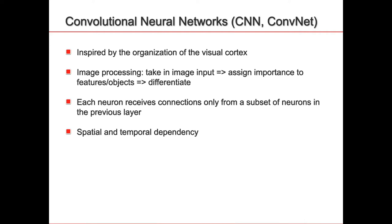In a CNN, each neuron receives connections only from a subset of neurons — not all, unlike a standard neural network where each neuron receives a weight from all nodes in the previous layer. This reduces the number of parameters: the weight matrix W has the same size but contains many zero values. The CNN can capture spatial and time dependencies between pixels. Spatial dependency refers to the relationship between nearby pixels; time dependency refers to the relationship between different moments of the same pixels in a video.